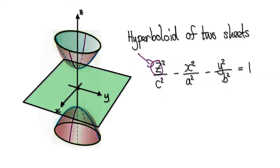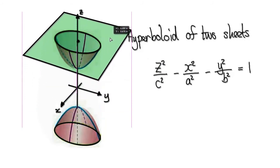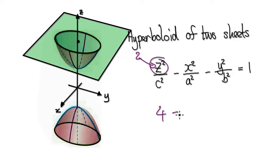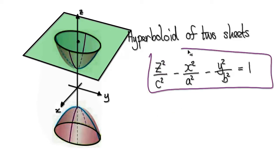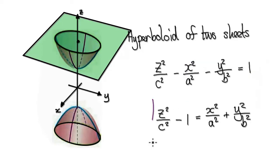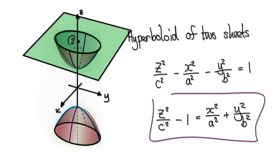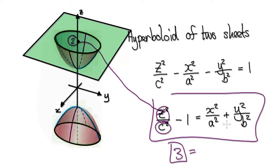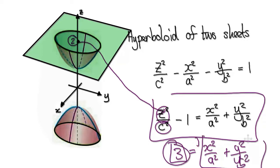But as you increase the height — let's say the height is at 2 — let's rearrange the equation first by moving terms to the other side. When you put 2 into z, and imagine c equals 1, you get z²/c² minus 1, which is 4 minus 1 equals 3. So you have a constant on the right-hand side with an expression in x and y. The minute you see a constant and this form, you know you're going to get circles or ellipses.